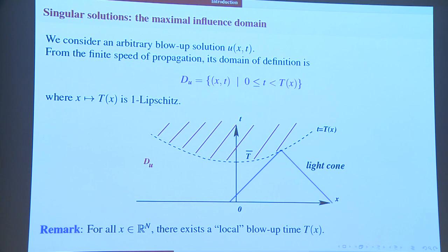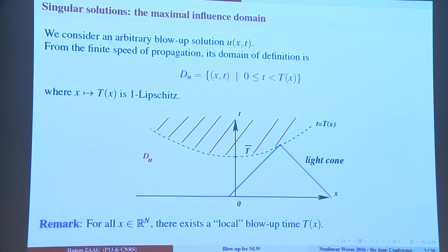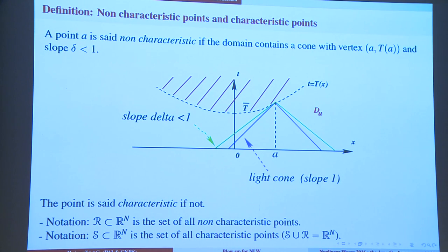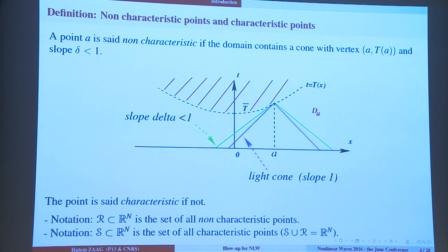All this comes directly from the Cauchy theory, which we do in H1 times L2, because we are subcritical. If you take any point on this surface, the backward light cone with vertex x, T(x) is included in the domain of definition. We then give a geometric definition: if you can change the slope of your light cone and make a cone with slope strictly less than one and still stay in the domain of definition, we say that we have a non-characteristic point. Their set will be called script R.